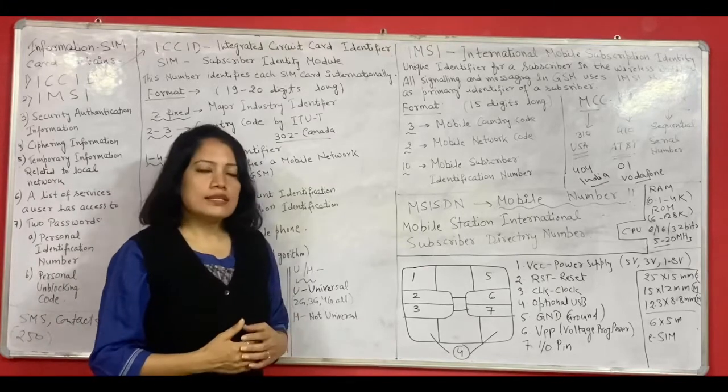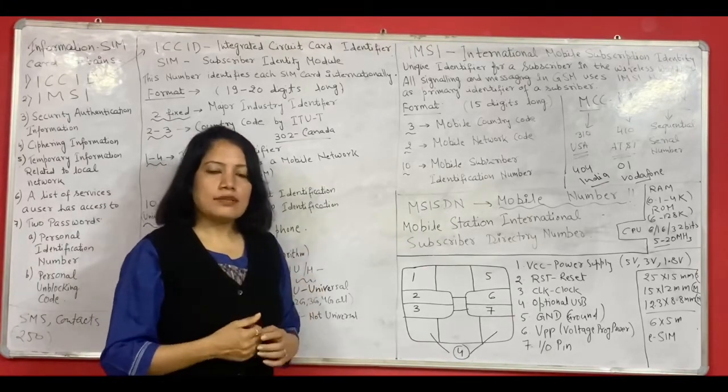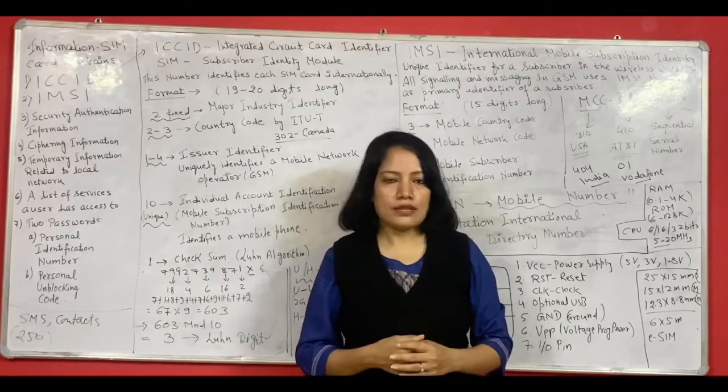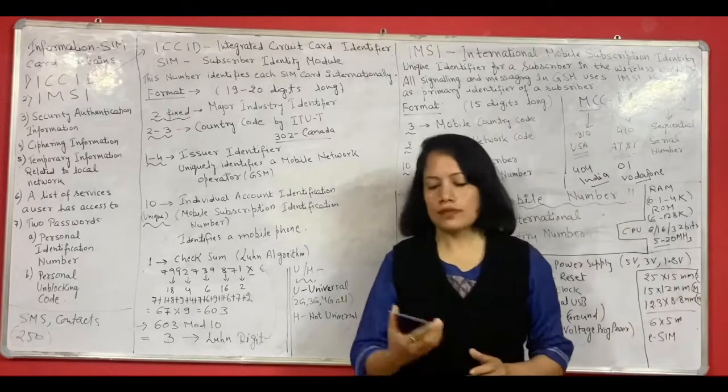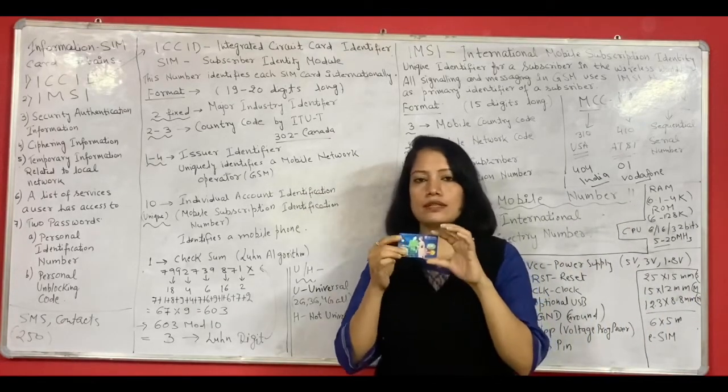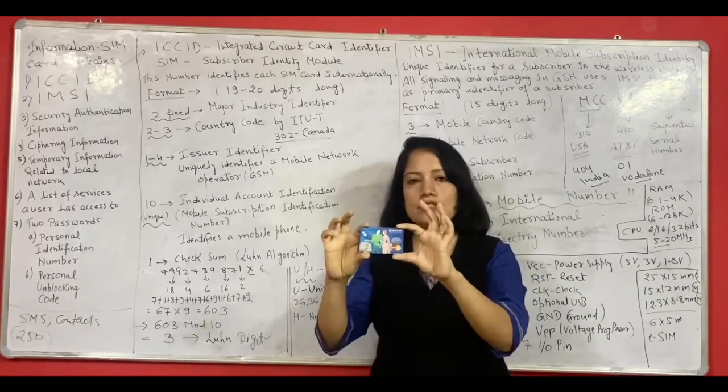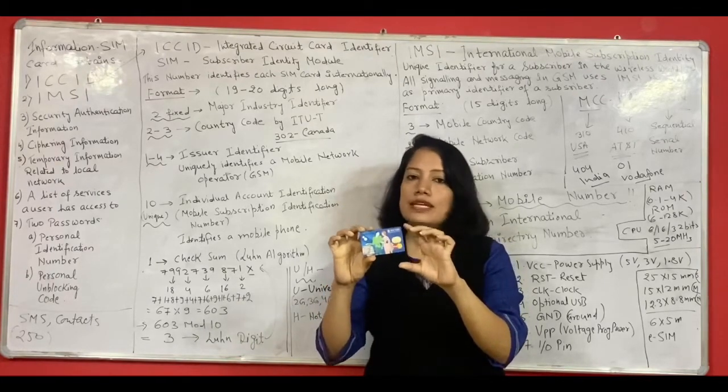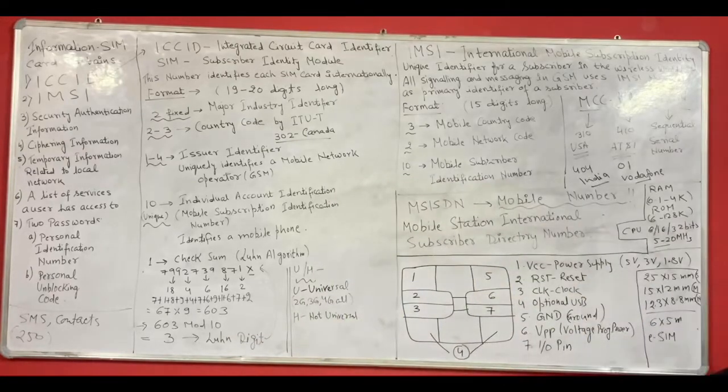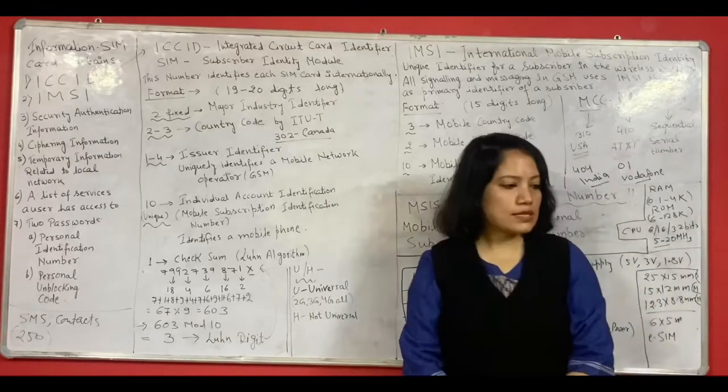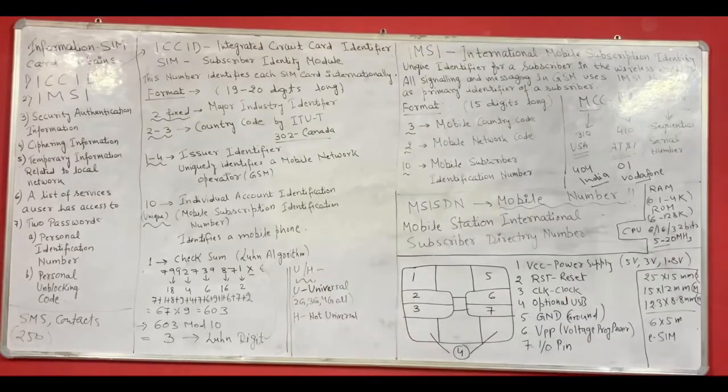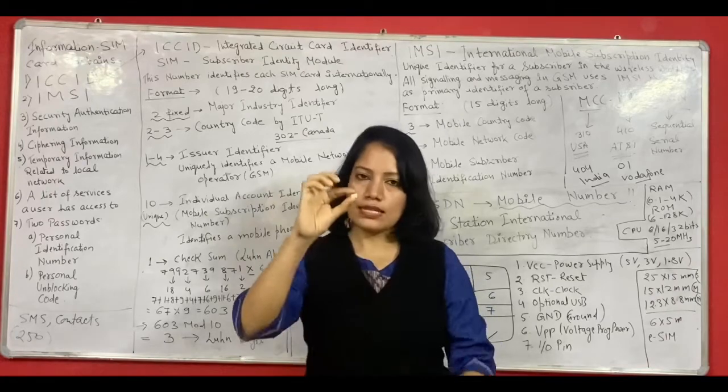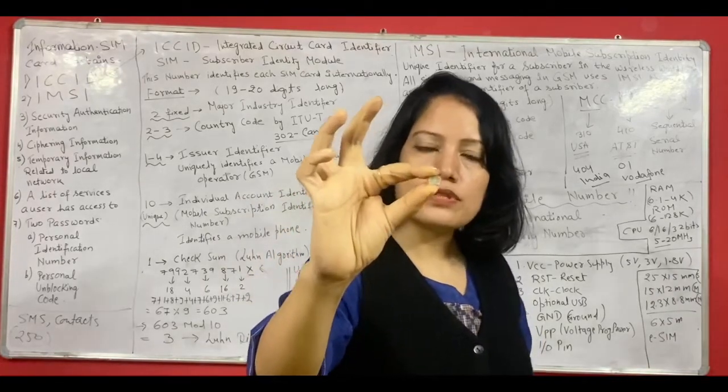Now let us quickly look at the structure of a SIM card. Now I must tell you that in the very beginning what was the size of a SIM card. So it used to look like this debit card. So the size of a debit or credit card was the size of the SIM card which was used in the very beginning. Now after that the sizes kept on reducing. And nowadays what we use is the SIM card of almost this size. So this is the size that we use nowadays.